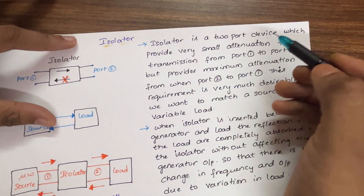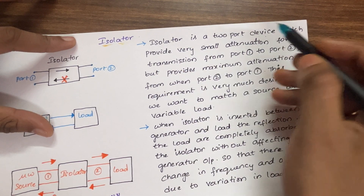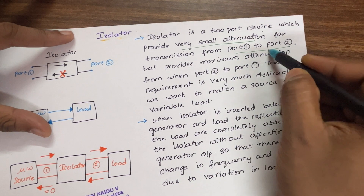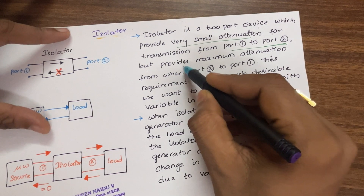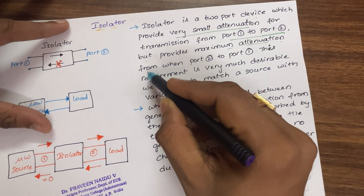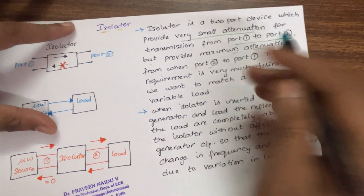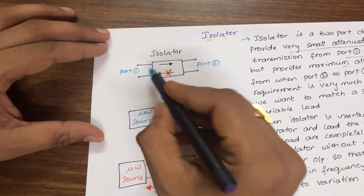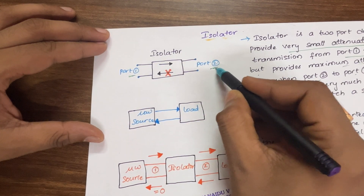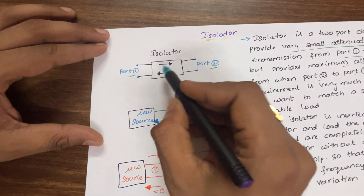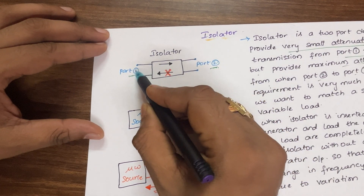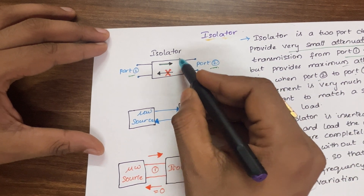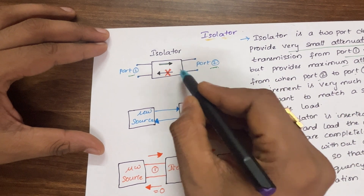Like a gyrator, this two-port device will provide very small attenuation for transmission from port 1 to port 2, but it provides maximum attenuation from port 2 to port 1. As you can see in the block diagram, port number one and port number two are labeled. When moving from the first port to the second port, the wave has very small attenuation.